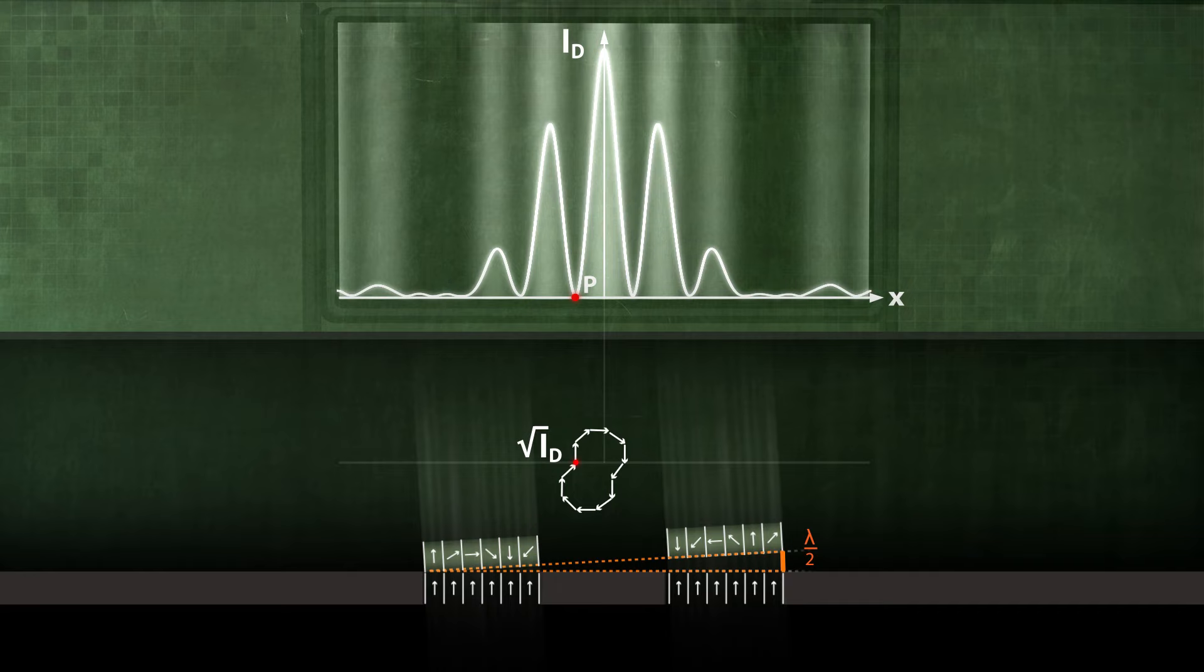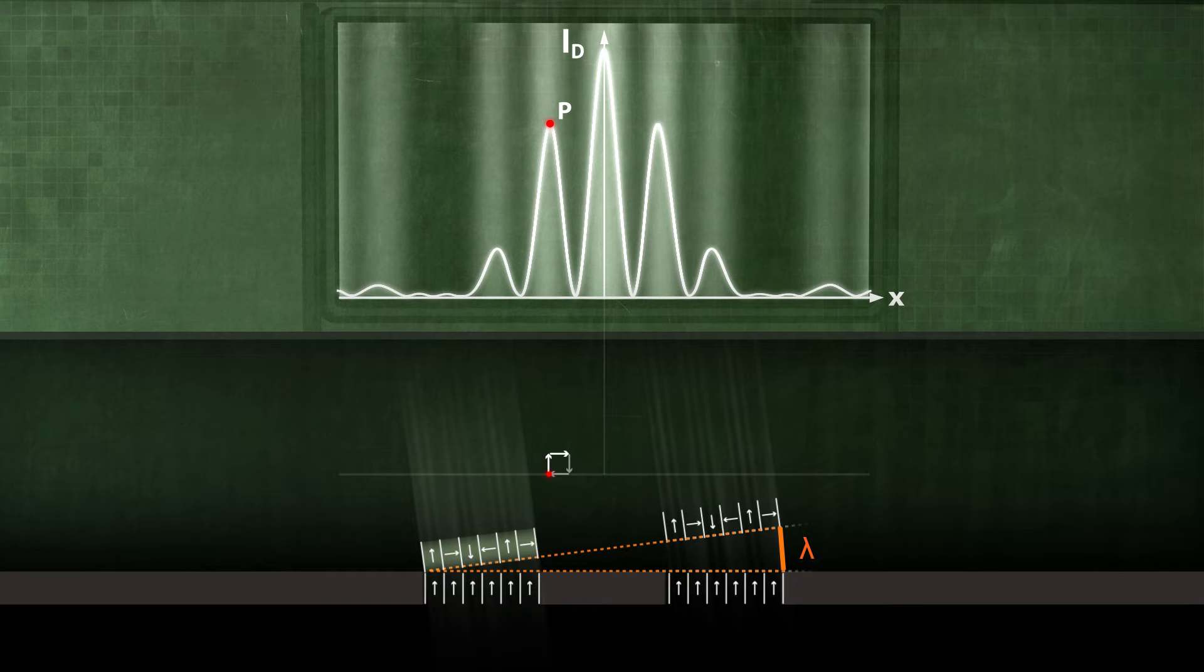If the path difference delta between the two slits corresponds exactly to one wavelength lambda, we obtain the secondary maximum.